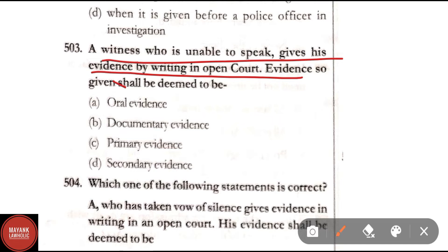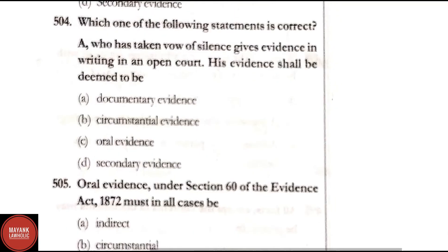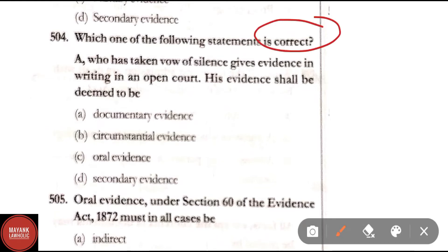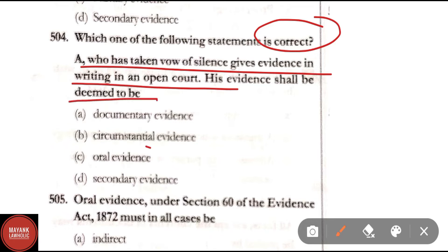Question 503: A witness who is unable to speak gives his evidence by writing in open court — evidence so given shall be deemed to be — correct answer is Option A, that is oral evidence. Question 504: Who has taken a vow of silence and gives his evidence in writing in an open court — his evidence shall be deemed to be — Option C is the right answer, oral evidence.